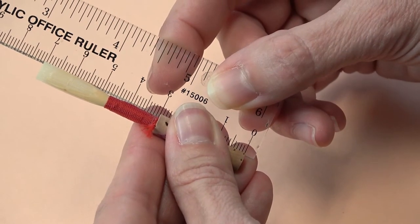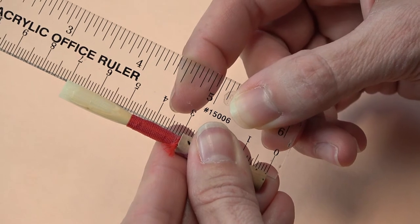The finished length of the reed from the bottom of the cork to the end of the tip should be around 70 millimeters.